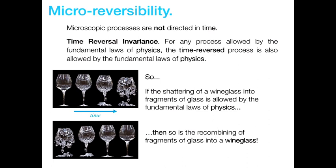The idea is that, contrary to our standard intuitions, there's a sense in which it's equally possible for one direction to happen as for the other. And for all we know, we could really be in a world where all our beliefs about the original causation are wrong. So this is kind of the problem of micro-reversibility.